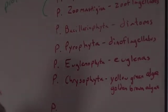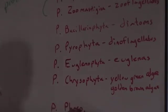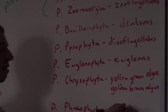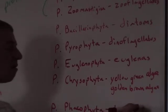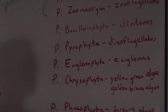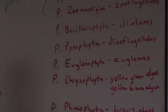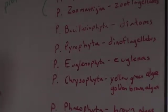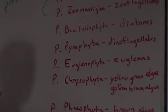Phylum Phaeophyta — brown algae — or kelp. Kelp is an example of a brown algae. Those are the ones that form the forests. Phylum Rhodophyta — red algae. Phylum Chlorophyta — green algae.